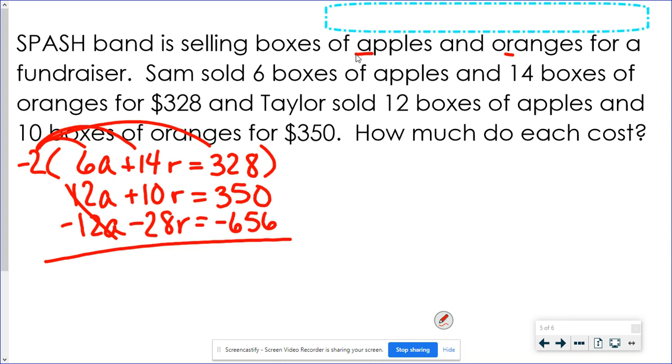10 and negative 28, both are R's. That's going to be a negative 18R. Negative 306 divided by negative 18 is going to give me a positive answer, which is good. I can't have a negative price for something. 306 divided by 18 is going to be $17 for a box of oranges.